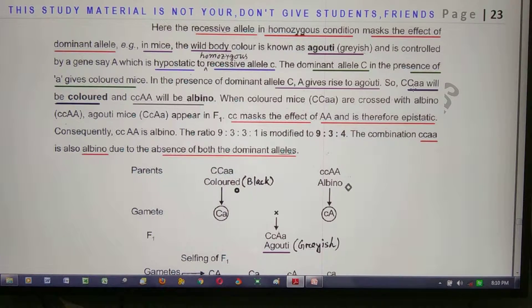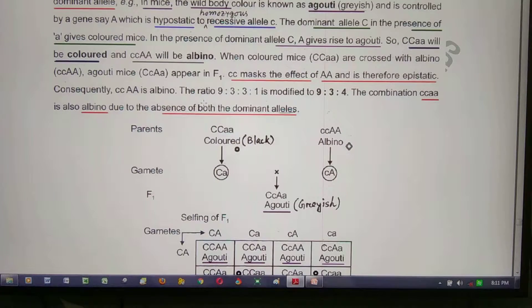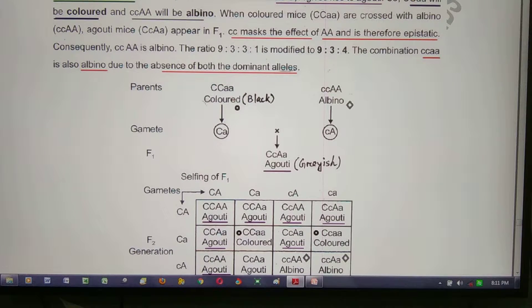So capital C capital C small a small a will be colored. And small c small c capital A capital A will be white. The cross produces a ratio of 9 is to 3 is to 4.